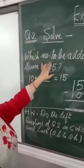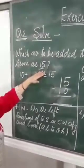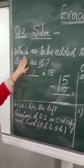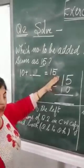Which number to be added to 10 to get the sum as 15? Once again, which number to be added to 10 to get the sum as 15?